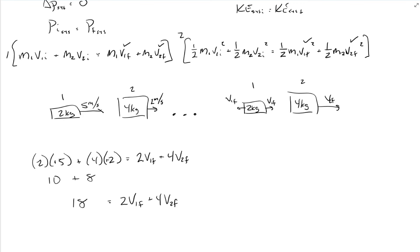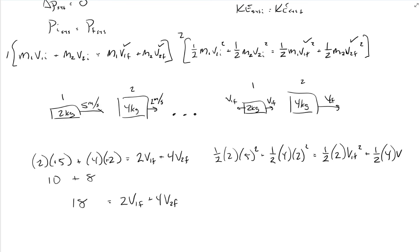Now for kinetic energy: one-half of two times five squared plus one-half of four times two squared equals one-half of two times V1 final squared plus one-half of four times V2 final squared. Cleaning that up — the half and the two cancel, five squared is 25, and one-half of four times four gives eight — so 33 on the left side equals V1 final squared plus two V2 final squared. There's our system.